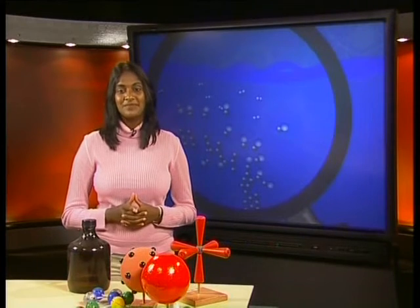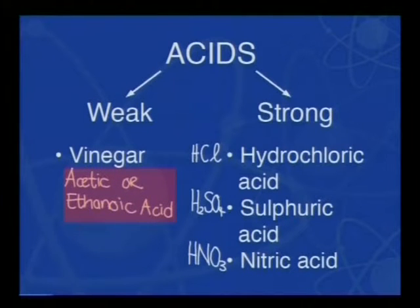For less reactive metals, we need another source of hydrogen to continue our reactivity series, and hydrogen chloride that we find in hydrochloric acid is an ideal example to use. We have not discussed acids in this or our previous series, so a little bit of background knowledge is important. Acids can be either strong or weak. An example of a weak acid is vinegar, which has two scientific names: acetic acid or ethanoic acid.